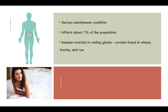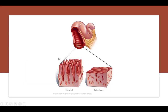Celiac disease is a serious autoimmune disorder that affects about 1% of the population. It is a genetic condition in which the ingestion of gluten, a protein in wheat, leads to damage in the small intestine. When a person with celiac disease consumes gluten, it triggers an immune response in the small intestine.